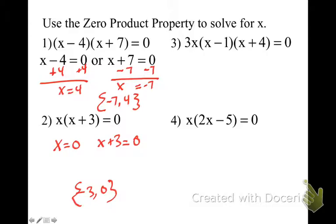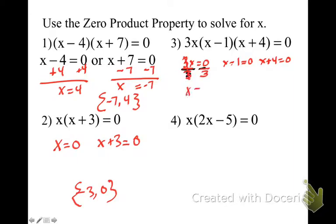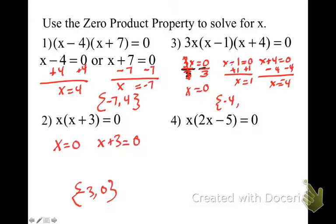Number 3 is not any different except you have 3 factors. So now we're setting 3 factors equal to 0. For the first factor, dividing by 3 gives x equals 0. Adding 1 gives x equals 1. Subtracting 4 gives x equals negative 4. So I'm putting negative 4, 0, and 1 as my solutions. When it's a one-step equation, you don't have to show your work, but for a two-step you may lose a negative, so definitely show your work for those.